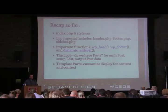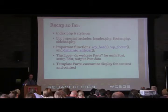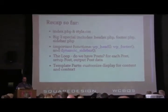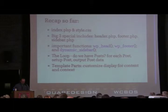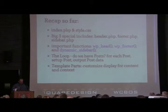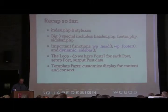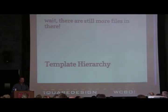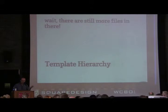The loop is a simple block of code that asks if we have any posts and if we do, does something with them. Template parts let us organize our code efficiently depending on content type and context. And there's a lot more in an available theme than just an index, header, and footer — so what's all that other stuff?